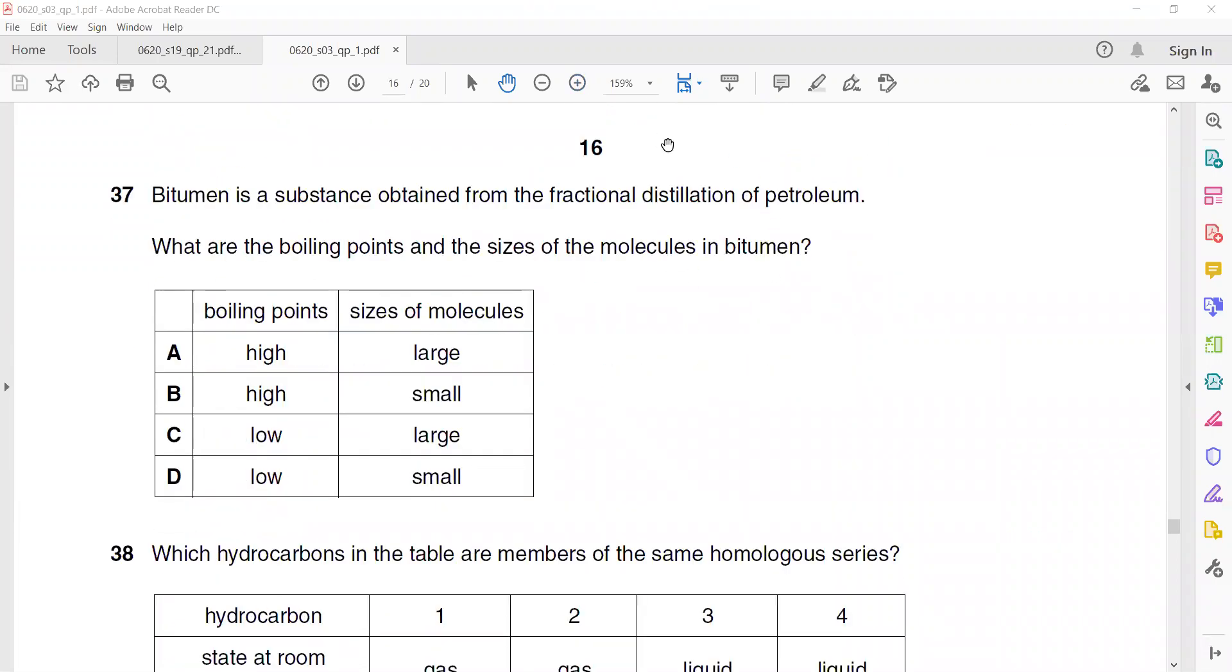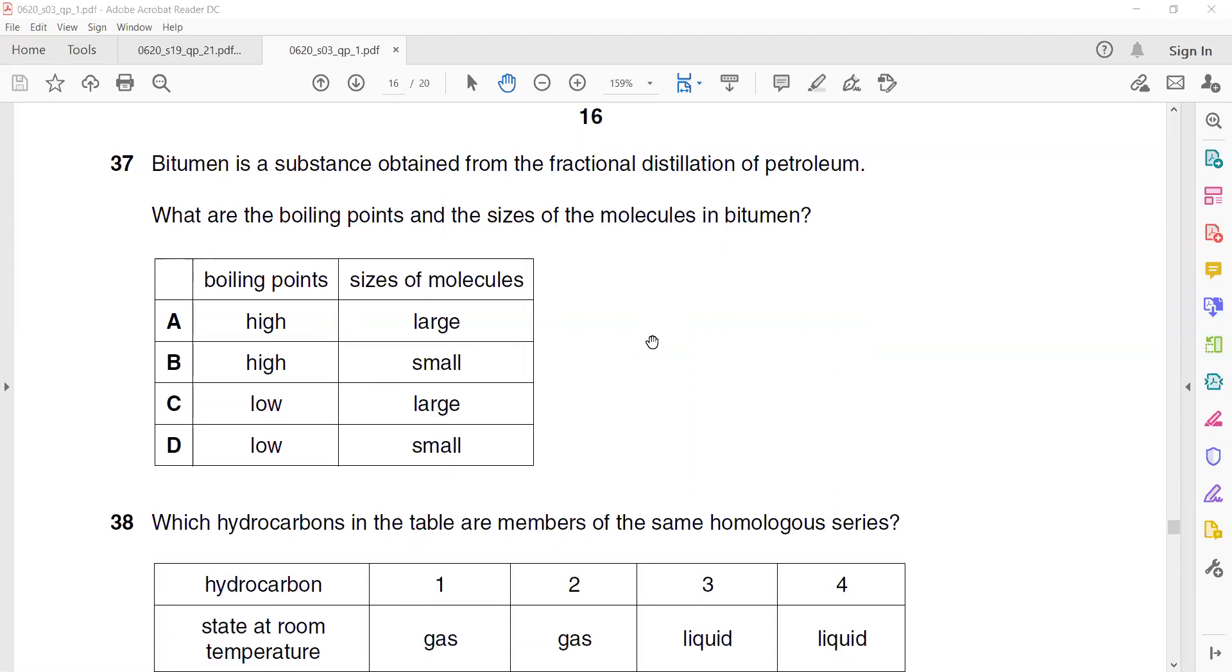Question 37. Bitumen is a substance obtained from fractional distillation of petroleum. The boiling point increases as the number of carbon increases. So the boiling point will be higher and the size of the molecule will be larger.